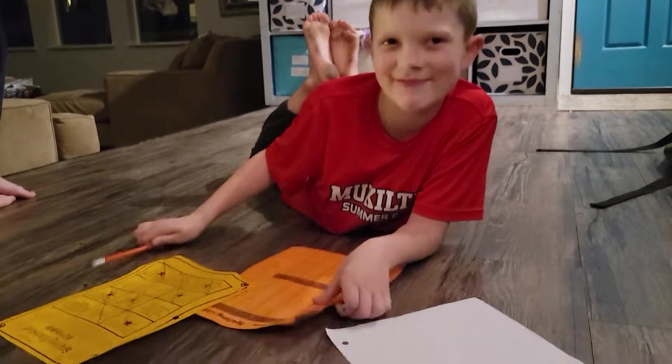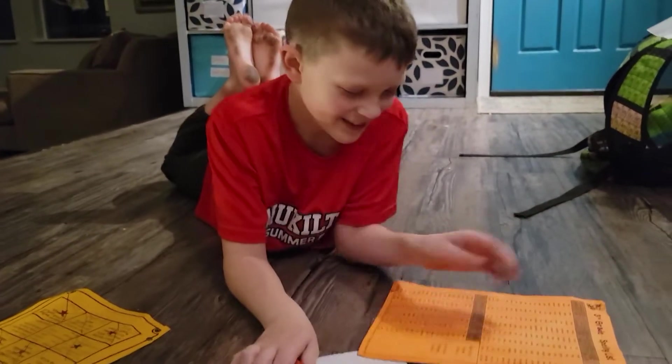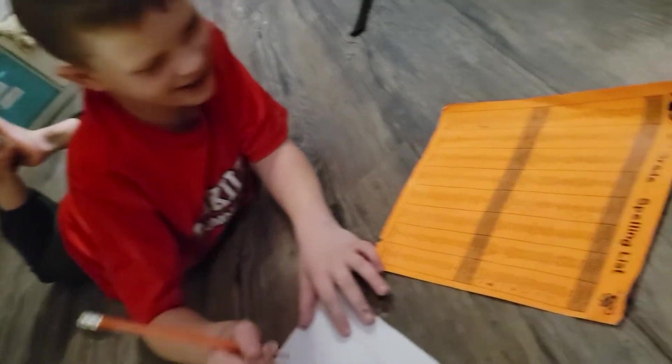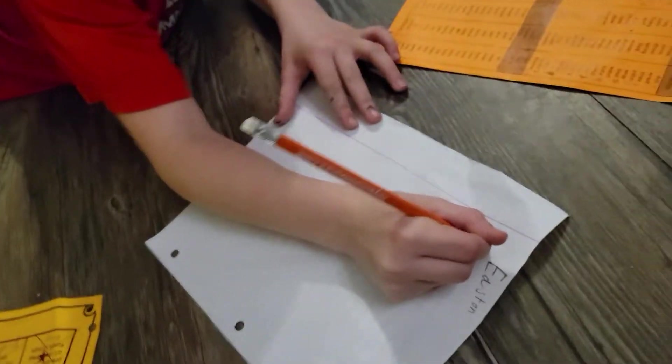Hi! Today I'm writing spelling words. The first spelling word is clown. If you want to, you can say clown. It's C, L, O, W.